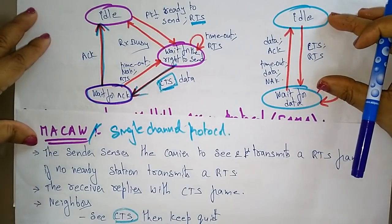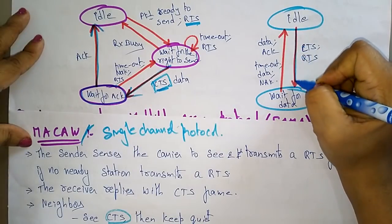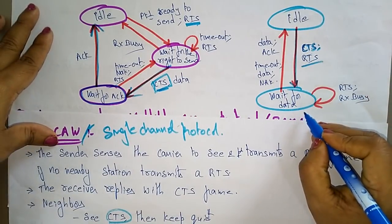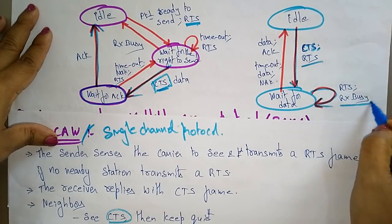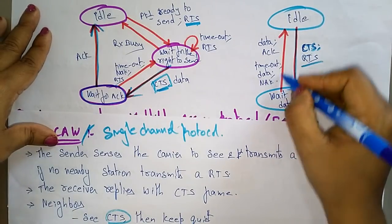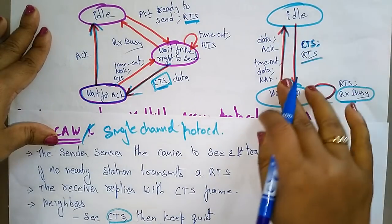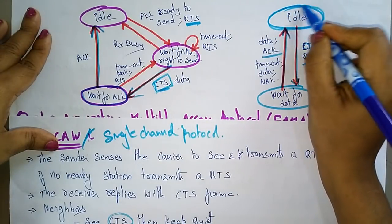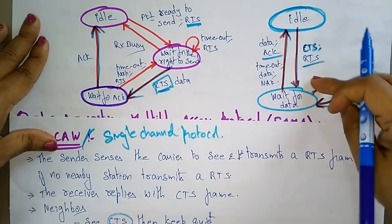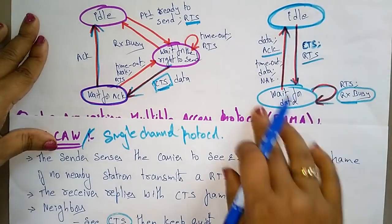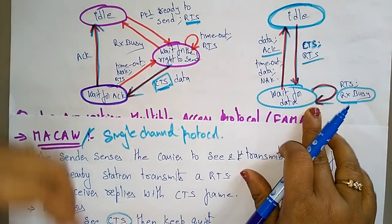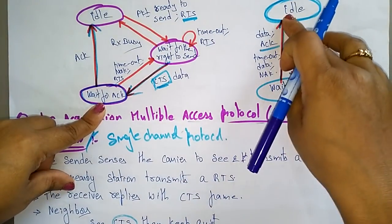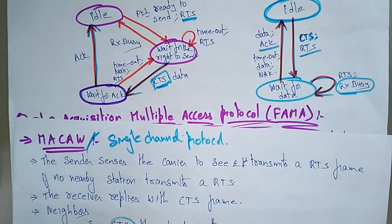On the receiver side: starting from idle, the receiver sends CTS — 'I am free, you can send data.' After sending CTS, the receiver waits for the data until the RTS, or until it becomes busy. If a timeout occurs or data is lost, it sends a Negative Acknowledgement (NACK). If data is received successfully, it sends an ACK. So the receiver: starts idle, sends CTS, waits for data, then either times out, sends NACK, or processes data and sends ACK.